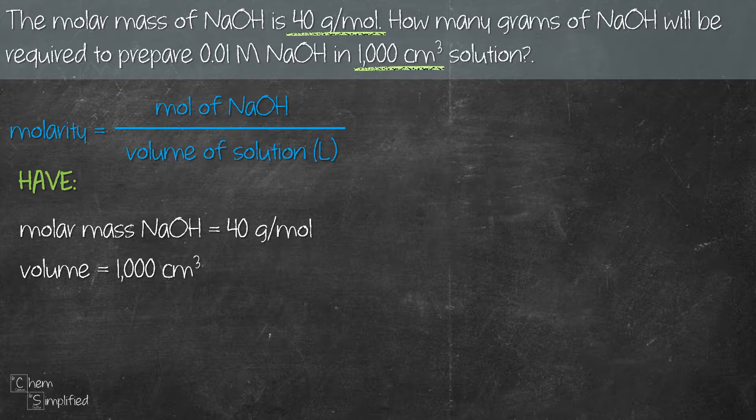Since the formula of molarity requires the volume of solution to be in liters, let's go ahead and do the conversion. 1 cm³ is equivalent to 1 mL, whereas 1000 mL is equivalent to 1 liter. So basically what we have, 1000 cm³, is equivalent to 1 liter.